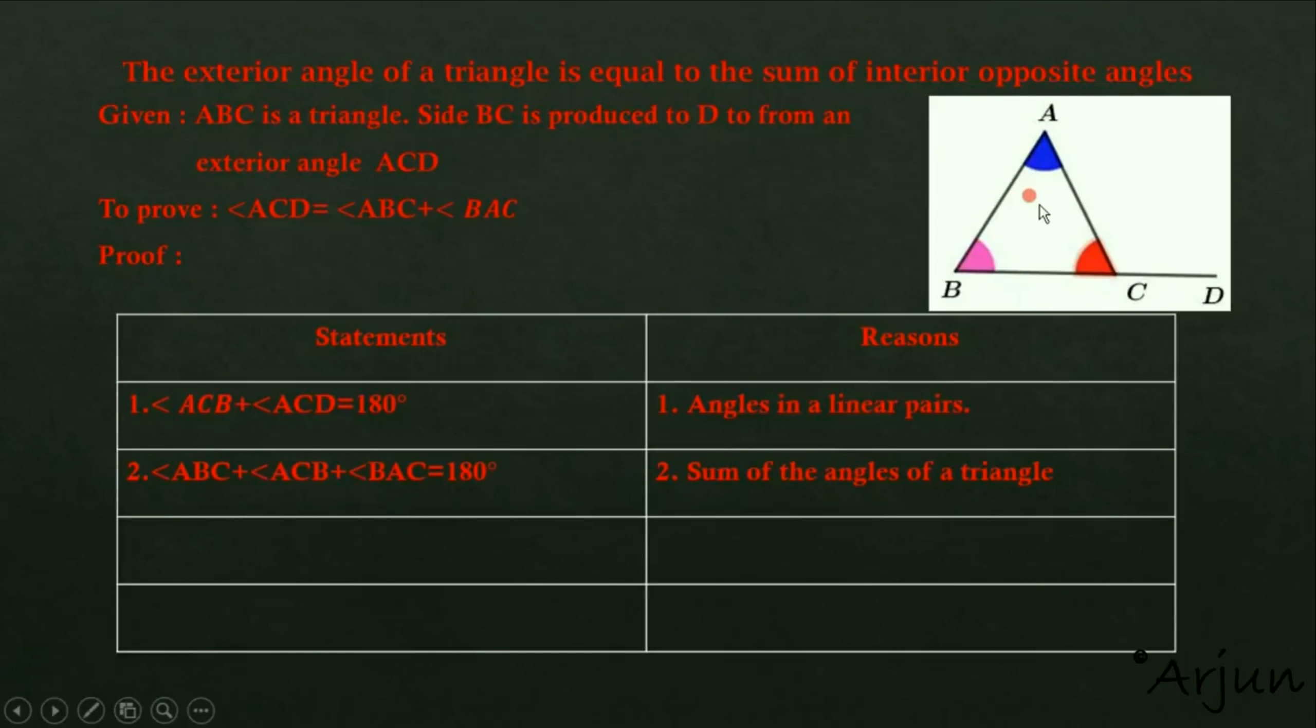So angle A plus angle B plus angle C, these are the interior angles of triangle ABC, and their sum equals 180 degrees. The reason is the sum of angles of a triangle. Now, statement three.